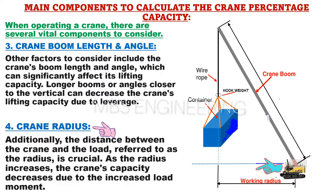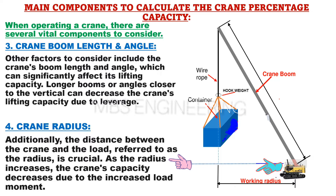The fourth component is the crane radius. The distance between the crane and the load, referred to as the radius, is crucial. As the radius increases, the crane's capacity decreases due to the increased load moment.